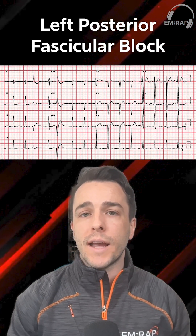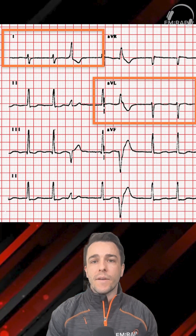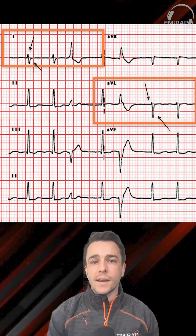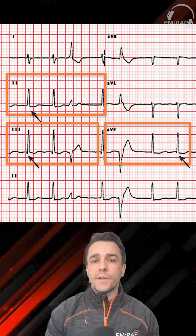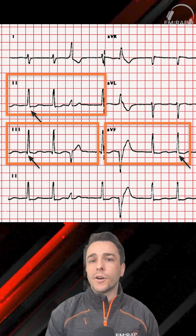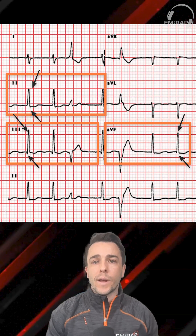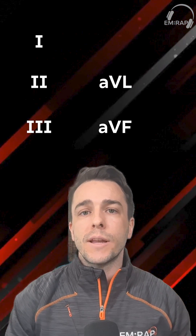I remember the left posterior fascicular block as the opposite. In leads I and AVL, we have a small positive deflection in our R wave and a large negative deflection in our S wave. Then in our inferior leads, we have a small negative deflection in our Q wave and a large positive deflection in our R waves. Think of them as opposites, grouped by the lateral leads (I and AVL) versus the inferior leads (II, III, and AVF).